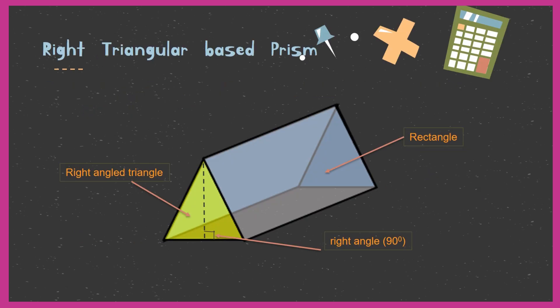Now let us look at the right triangular based prism. Like we did for the cylinder, we are going to see the parts of the right triangular based prism. From the name you will know it has a right angled triangle — a right angle means 90 degrees. You have two triangles, one on each end, and around them we have three rectangles, one on each of the three sides of the triangle.